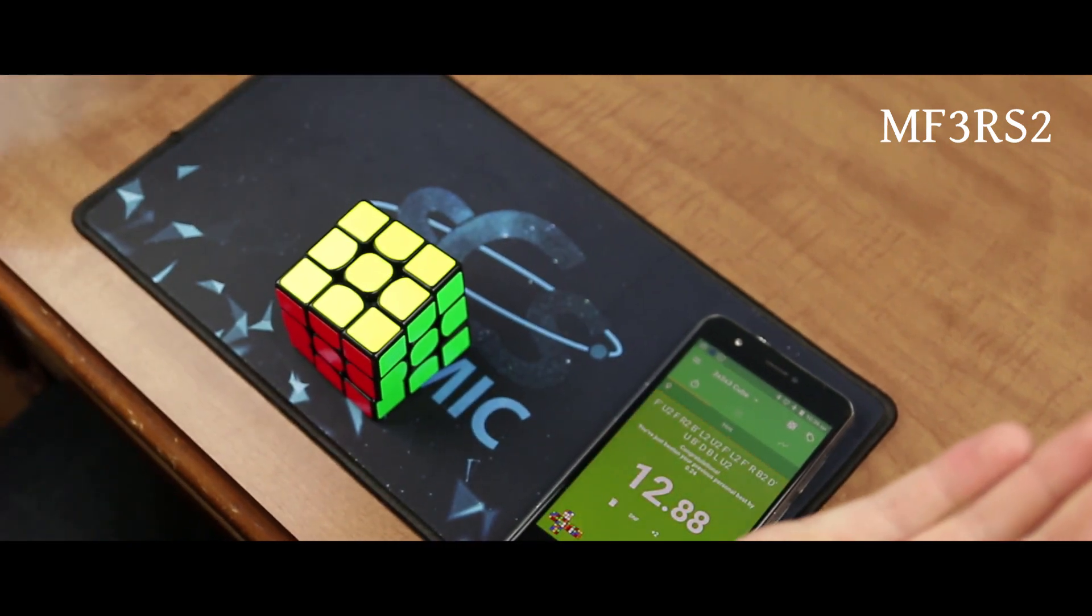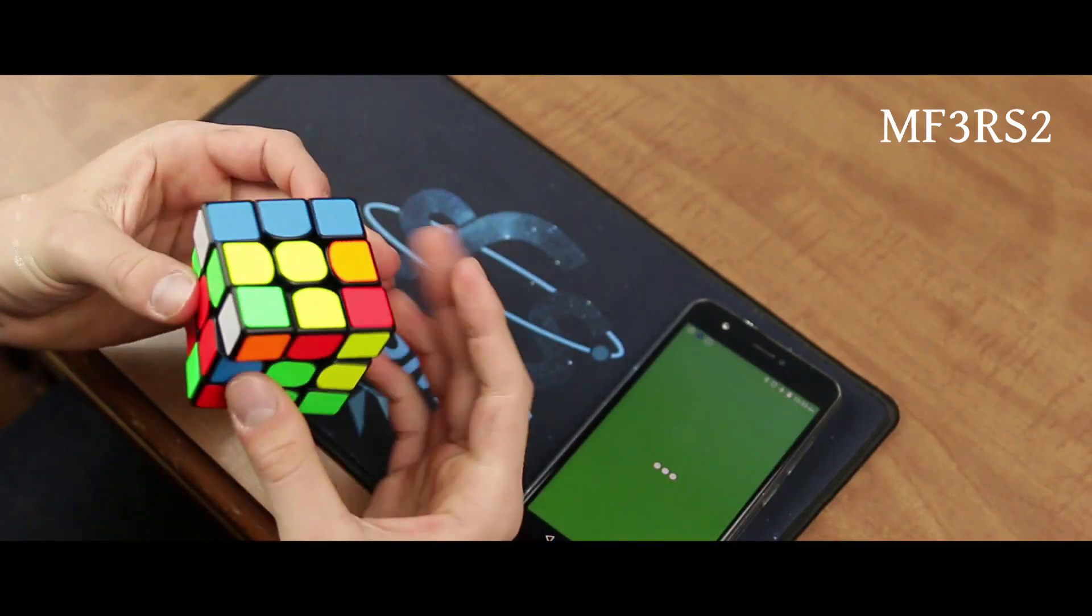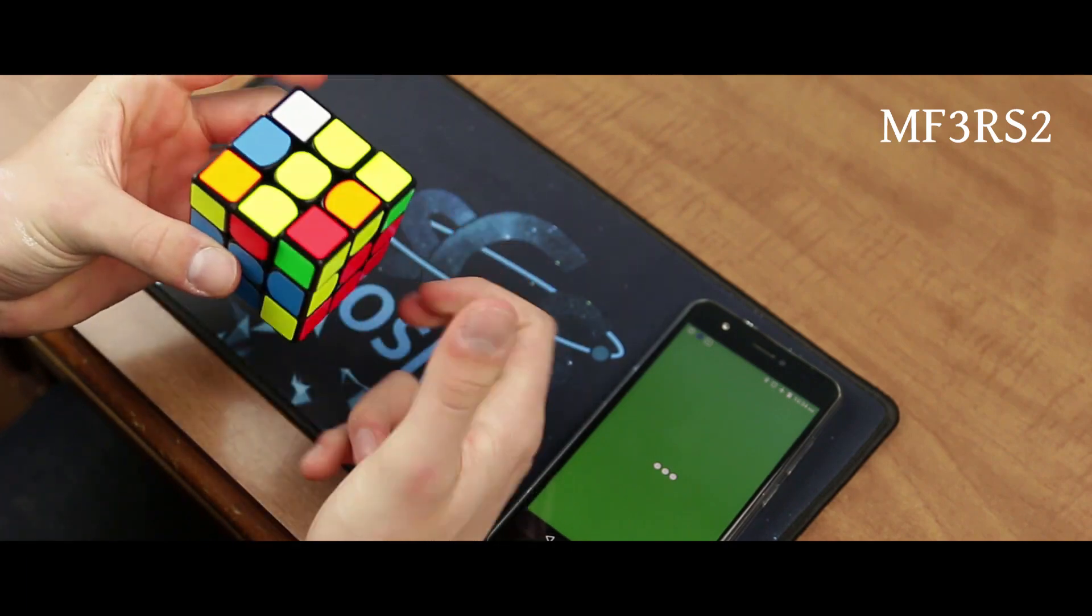And not only that, but I actually enjoy solving the MF3RS2 more than the Air SM, which I think is important. Is that to say that the Air SM is a bad cube? Not at all, but given the choice between the two, I think I might take the MF3RS2.